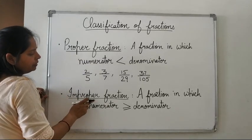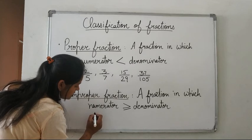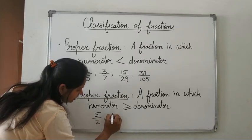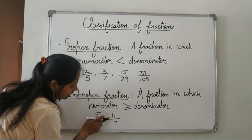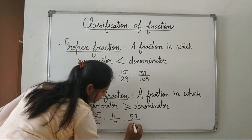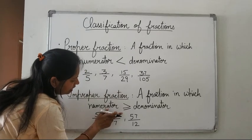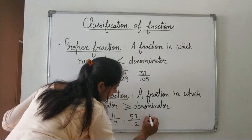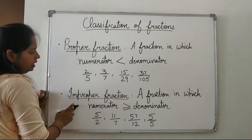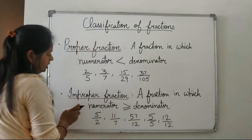The next type is an improper fraction — a fraction in which the numerator is greater than or equal to the denominator. For example, 5 upon 2, 11 upon 7, and 57 upon 12 are improper fractions where the numerator is greater than the denominator. Also, 5 upon 5 and 12 upon 12 are improper fractions because the numerator equals the denominator.